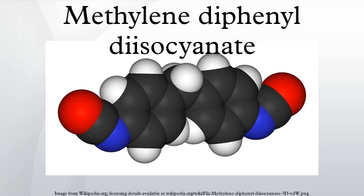The major application of 4,4-MDI is the production of rigid polyurethane. Typically, one ton of polyurethane foam needs 0.616 ton of MDI and 0.386 ton of polyol, with 0.054 ton pentane as a blowing agent. These rigid polyurethane foams are good thermal insulators and used in nearly all freezers and refrigerators worldwide, as well as buildings. Typical polyols used are polyethylene adipate and polytetramethylene ether glycol.